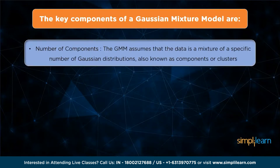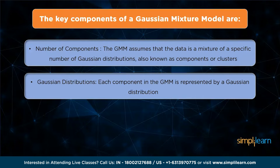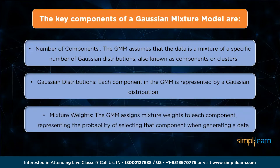The key components of a Gaussian mixture model are: first, the number of components, also known as clusters. The GMM assumes that the data is a mixture of a specific number of Gaussian distributions, typically determined in advance or estimated using model selection techniques. Second, each component is represented by a Gaussian distribution — a bell-shaped curve fully described by its mean and covariance. Third, mixture weights are assigned to each component, representing the probability of selecting that component when generating a data point. These weights must sum to one.